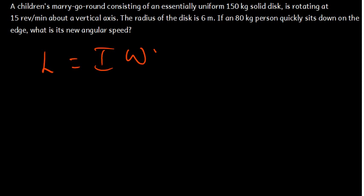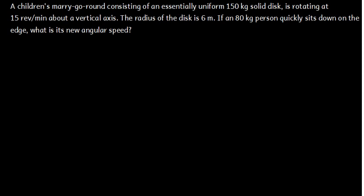We have the angular momentum before and angular momentum after. The angular momentum before the person was sitting on the disk — before, we have two things. But after, the person is sitting on top of the disk, so when the disk was rotating, the person was also rotating, meaning the speed of the person and the speed of the disk is going to be the same. So, the angular momentum before is equal to the angular momentum after.